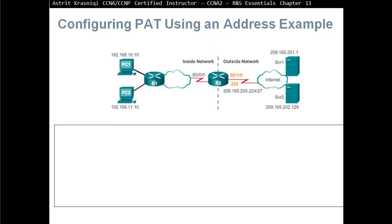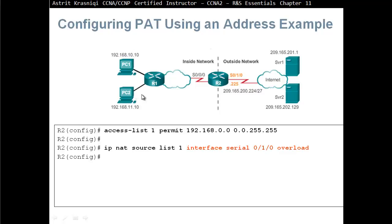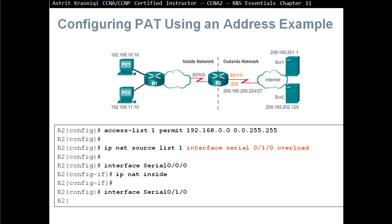When configuring PAT using an interface address, we don't create a pool — we translate to the IP address on the interface itself, so we're translating to a single address. We create an access list that permits both networks, then use IP NAT inside source list 1 interface serial 0/1/0 overload — the overload keyword enables PAT. You cannot do this with dynamic NAT.